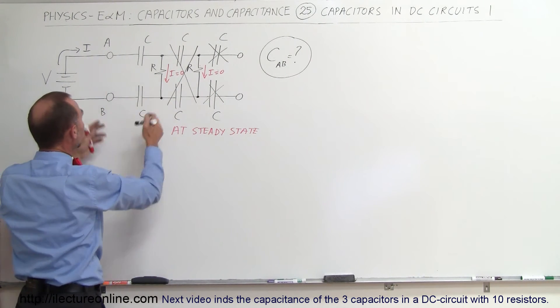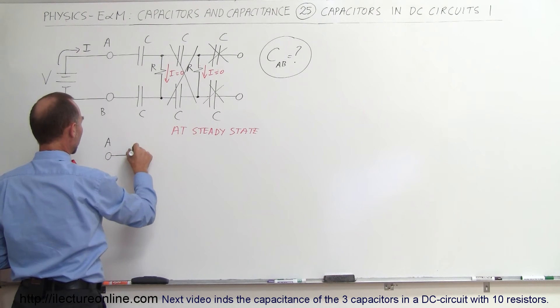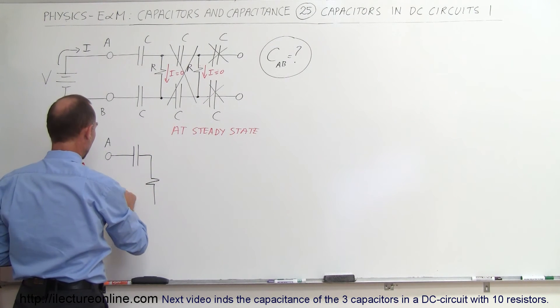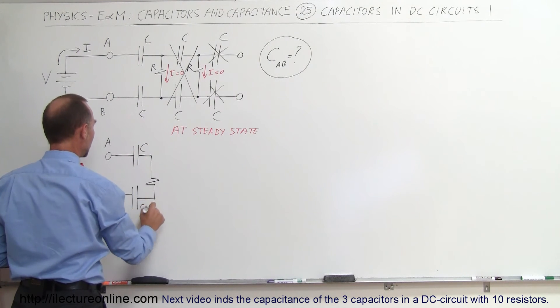So essentially, this whole circuit will then collapse into an equivalent circuit that would look like this, A B with a capacitor, a resistor connecting them, and a capacitor on this side, like that, with C and C.